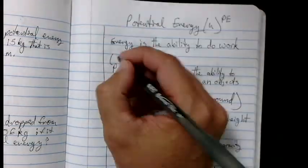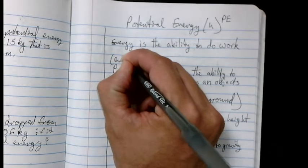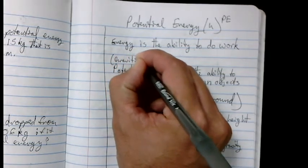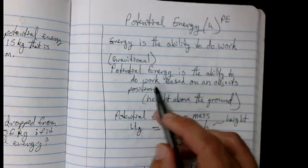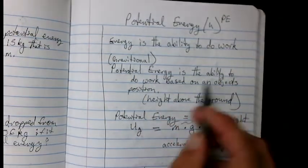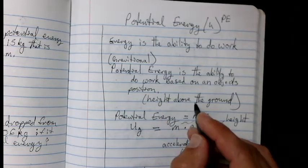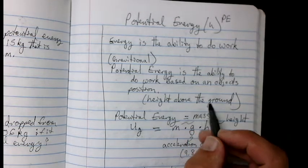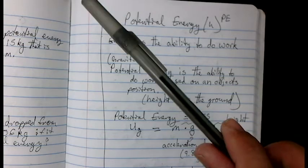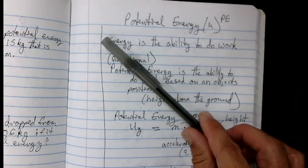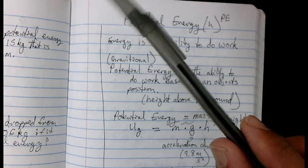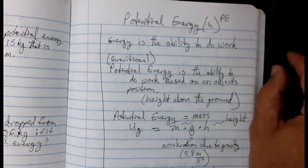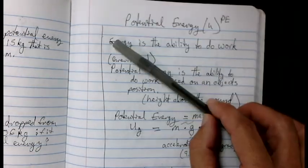Potential energy, and especially gravitational potential energy, which is what we are going to focus on, is the ability to do work based on an object's position, or its height above the ground. So you take an object, you raise it above the ground, you're doing work to create potential energy, and when you let go, gravity pulls the object down to the desk or to the ground.